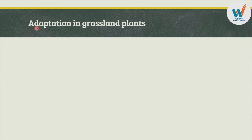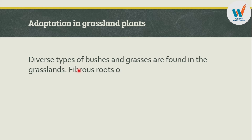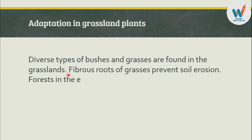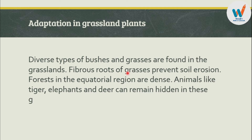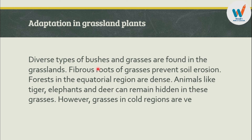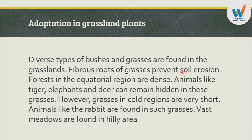Our next point is adaptation in grassland plants. The grassland plants are found in the grasslands. Fibrous roots of grasses prevent soil erosion. Animals like tigers, elephants and deer can remain hidden in these grasses. Also, forests in the equatorial regions are dense.